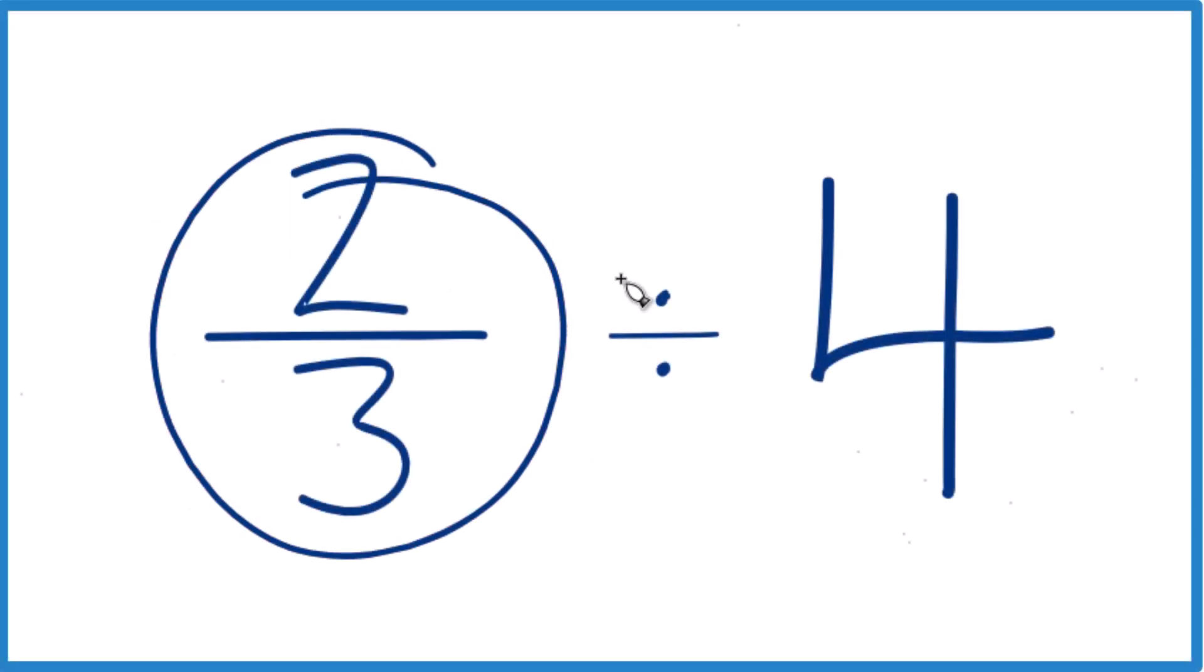In this video, we'll figure out two-thirds divided by four. So first off, two-thirds, that's less than one.